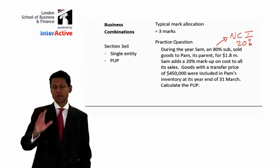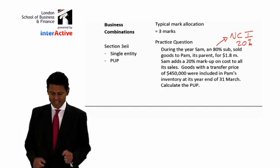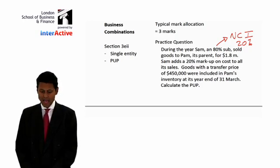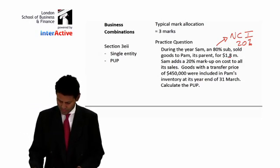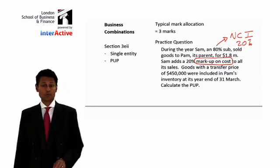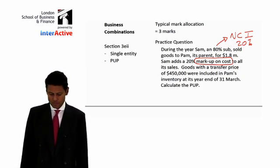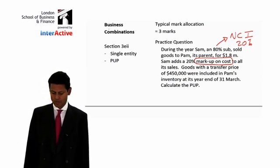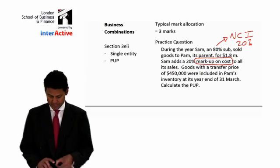So you're the parent and I'm the subsidiary — you own 80% of my company. I've sold to you goods for 1.8 million. I add a 20% markup on cost to all my sales. Remember the words: markup on cost — it doesn't say markup or margin or gross profit on selling price, it's on cost. Be careful. Goods with a transfer price of 450,000 were included in Pam's inventory at its year end of 30th March. Calculate the PUP — and that's precisely where I'd like to take you next.